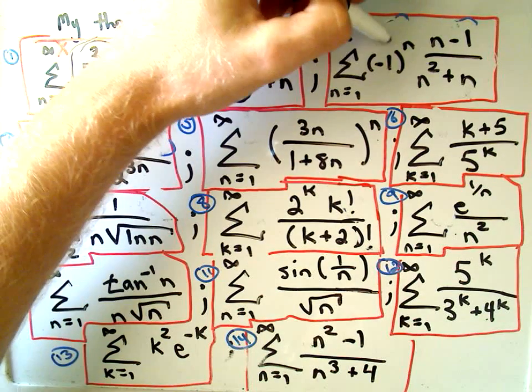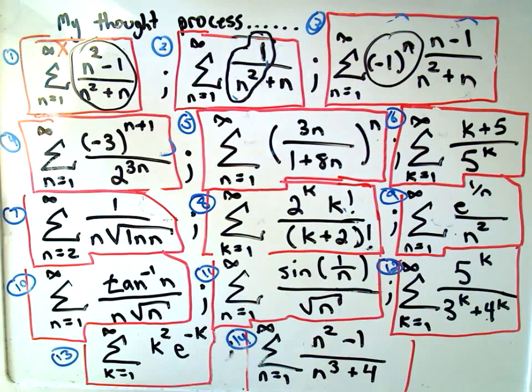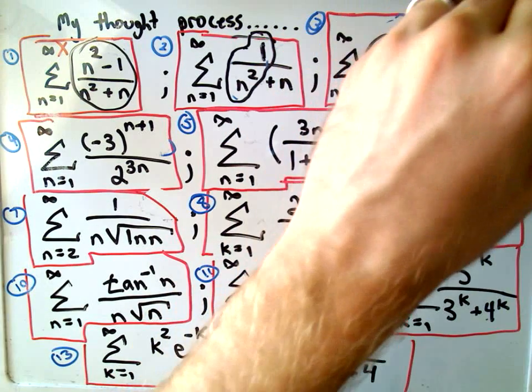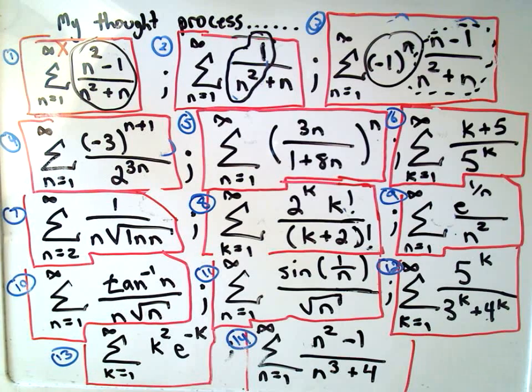For a lot of these problems, there's definitely multiple ways to do them. So if you've got a different way in mind, don't think that means it's not right. Number three, the thing that sticks out to me is the negative 1 to the n. That makes it an alternating series. So remember, there's then two things you have to show. You have to show that the limit as n goes to infinity of the stuff that's left over equals 0, which it certainly does. And then you also have to show that, in this case, the n minus 1 over n squared plus n, you have to show that that's decreasing, which it also is.